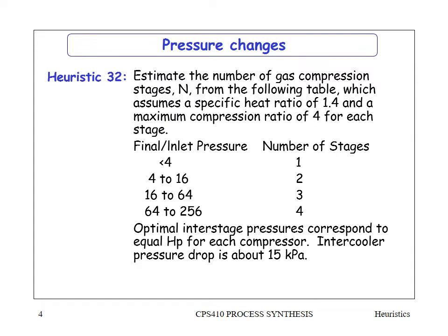This also refers to a specific heat ratio of 1.4, which is normal air. That specific heat ratio is important because it describes the isentropic temperature rise as you compress the gas. The higher the gas temperature rises when compressed, the more stages you will need. An example is the compressor from the Aspen tutorial, where the temperature rose to 1200 degrees without using interstage cooling.